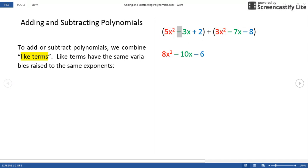We can put together -3x and -7x since they are both x to the first power. And we can put together the constant values 2 and -8.